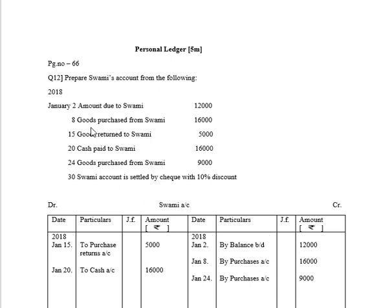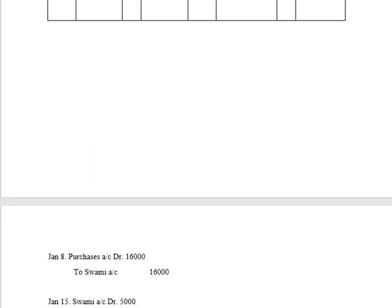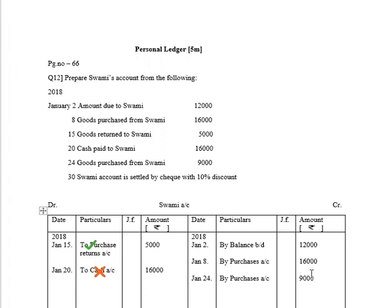The next transaction: January 8th, goods purchased from Swami, 16,000. Without writing the journal entries we are required to post it, but for explanation purposes we will discuss the journal entries and then post to the ledger account. The journal entry for purchasing goods from Swami is: Purchases Account Debit to Swami Account 16,000 rupees. As we are preparing Swami Account, we cannot write the name of Swami in Swami Account; we write the name of Purchases. Purchases is recorded on the debit side of the journal entry, so at the time of posting into the ledger it will be recorded on the credit side as: 2018 January 8th, By Purchases Account, 16,000 rupees.